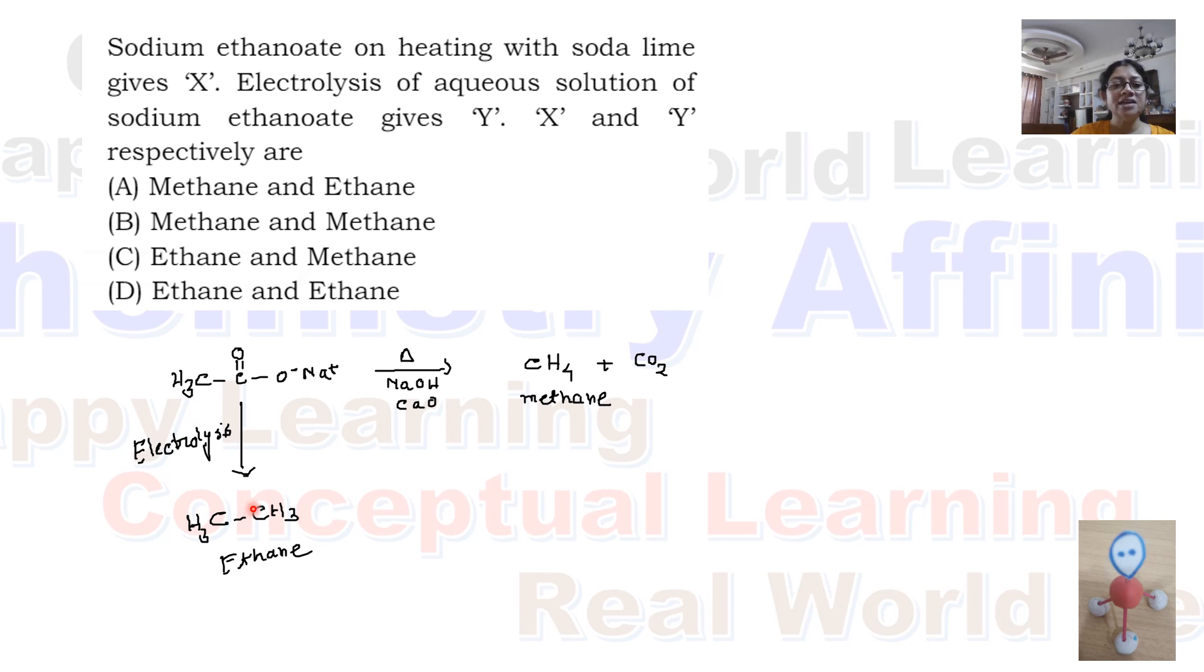Second reaction is the Kolbe electrolysis reaction. Here, two CH3 combine and we get ethane. So correct option is option A, methane and ethane.